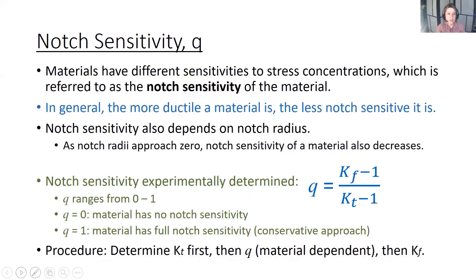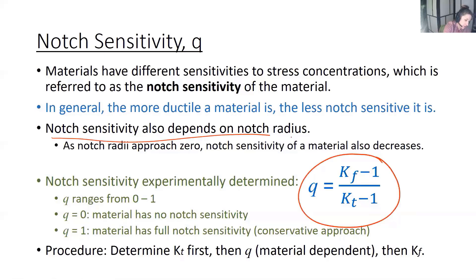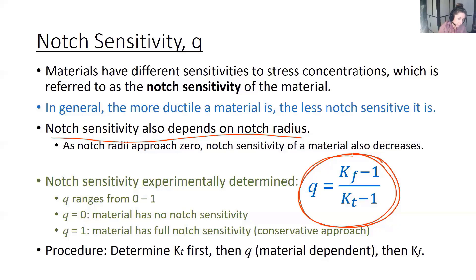Notch sensitivity Q refers to how sensitive a material is to stress concentrations. The more ductile a material is, the less notch sensitive it is. Brittle materials are more sensitive to notches. Notch sensitivity also depends on notch radius and is experimentally determined, ranging from 0 (no notch sensitivity) to 1 (full notch sensitivity). The procedure is: determine KT first, then Q (material-dependent), then KF.